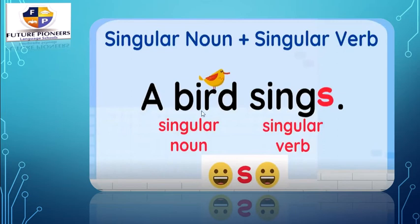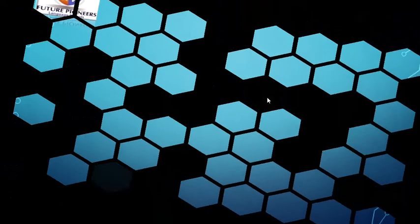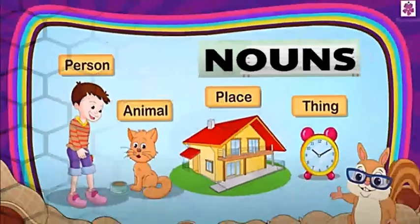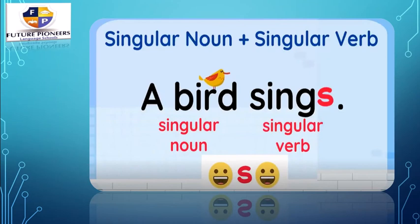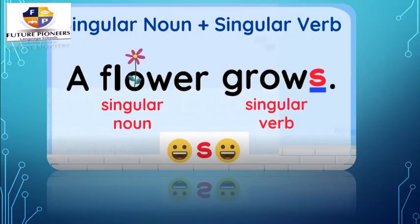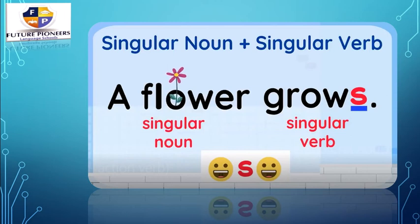A bird here is a singular noun because it's only one bird, so the bird sings. Let's see another example. Singular noun plus singular verb — add S to the verb. A flower grows. A flower, only one flower, it's a singular noun, so 'grows' is the singular verb. We know it's singular because it's only one flower and we added S to the verb.